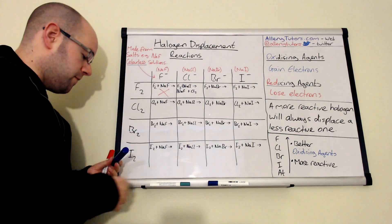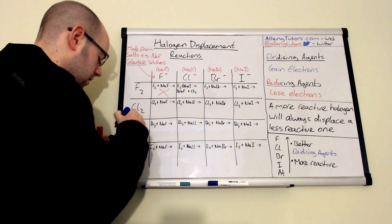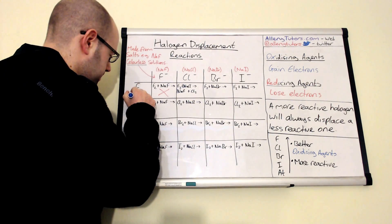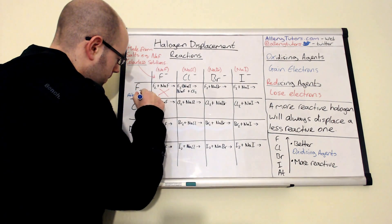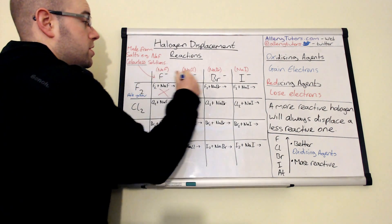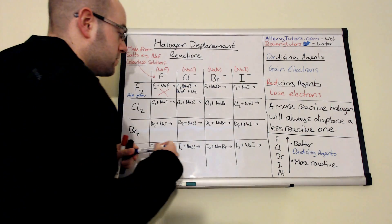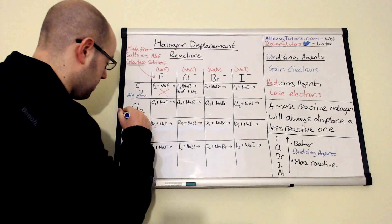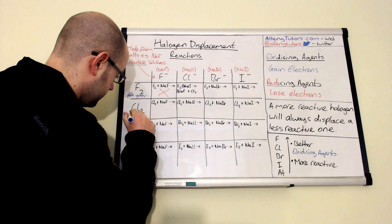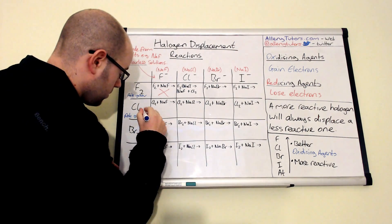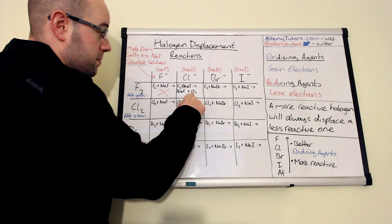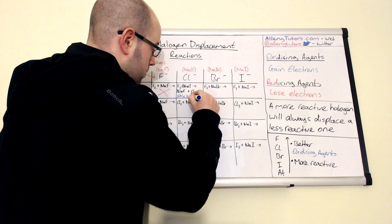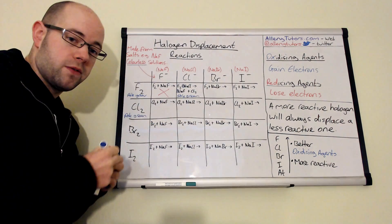Because we produce chlorine as a product, chlorine is actually pale green. So the solution that we would see should go from colourless to pale green — that colour change tells you that a displacement reaction has occurred.